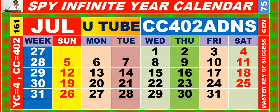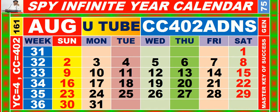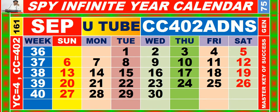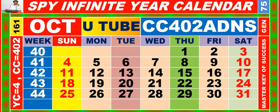Calendar for the month of July, having calendar code equal to 402. Calendar for the month of August, having calendar code equal to 402. Calendar for the month of September, having calendar code equal to 402.